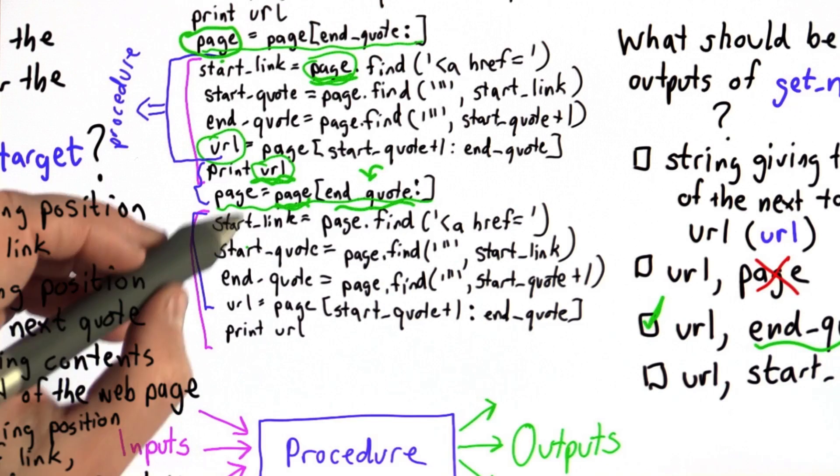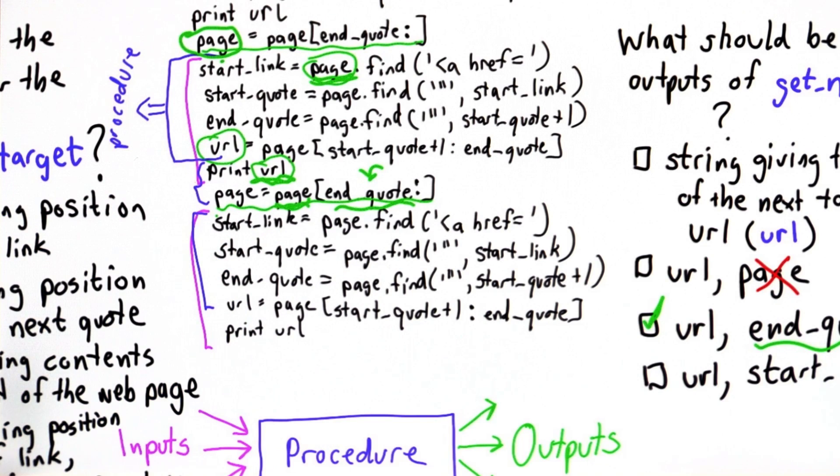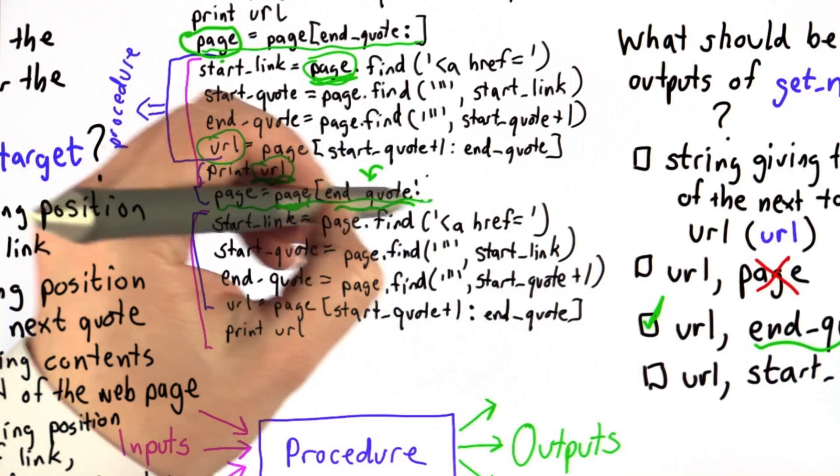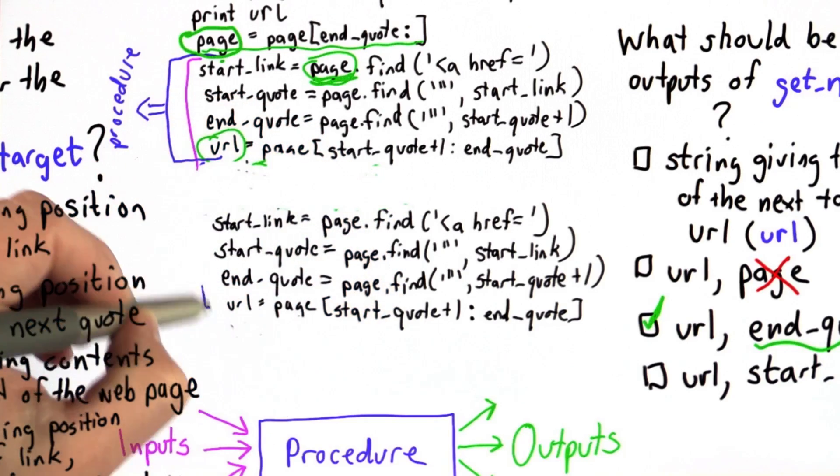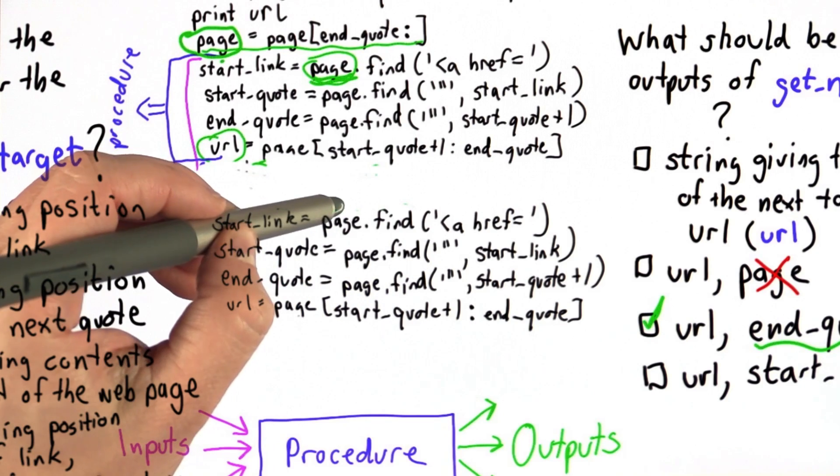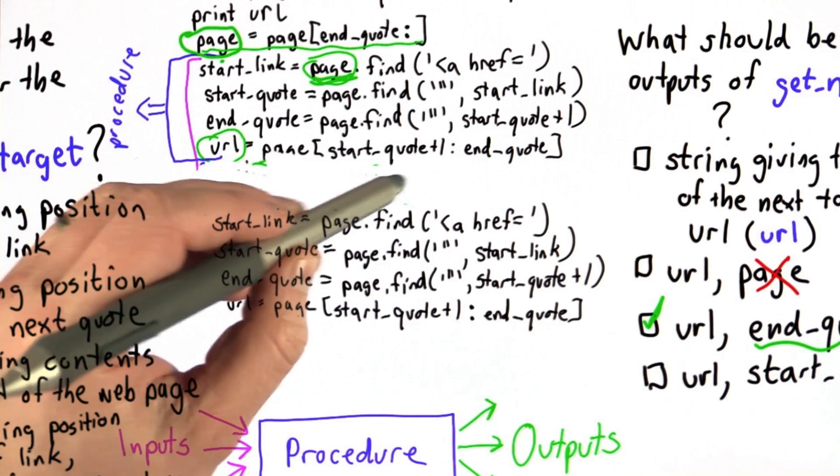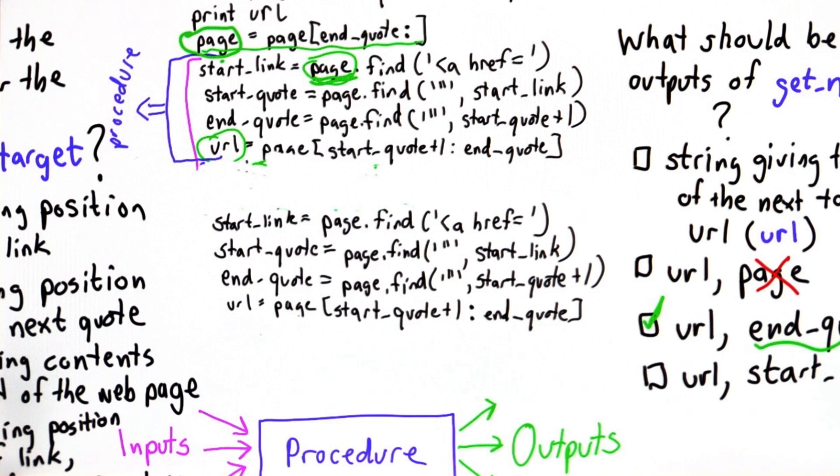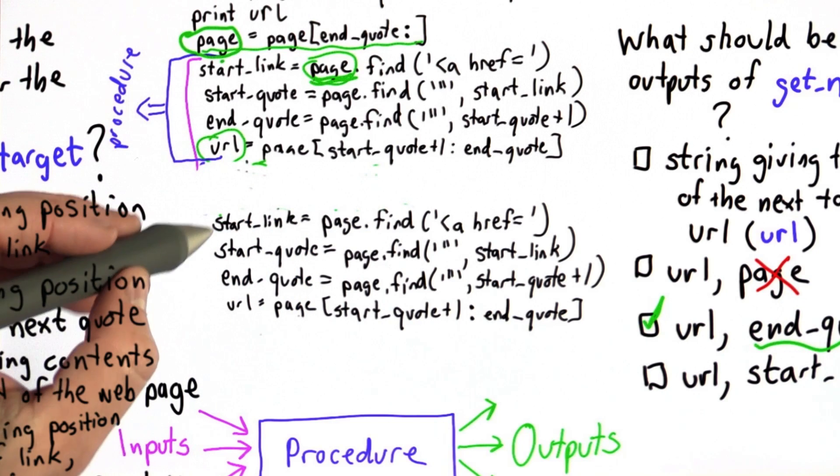So I'm going to write the procedure by modifying the code here. First what we're going to do is make a little space, erasing the code that's not part of the four lines that we want to turn into the procedure. So now I haven't modified the code at all. What I have is almost exactly what I need for the body of the procedure. This is what we want to do.